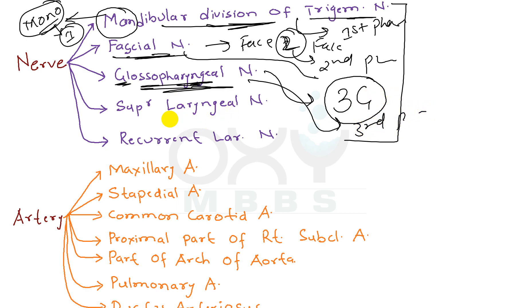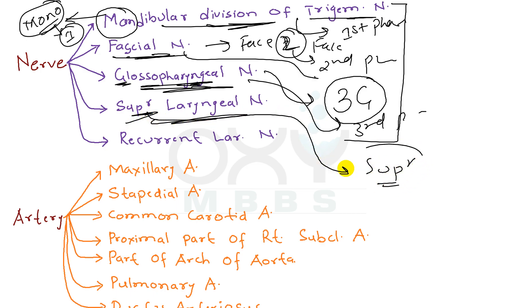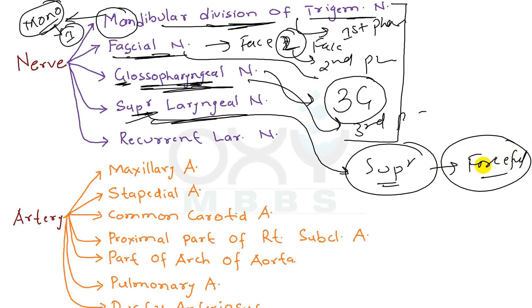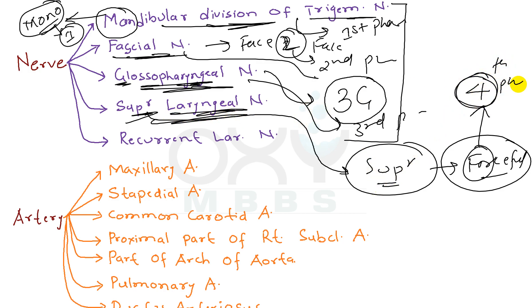Now coming to the superior laryngeal nerve. Superior people are very forceful — forceful gives us the number 4. It means the superior laryngeal nerve is derived from the fourth pharyngeal arch.